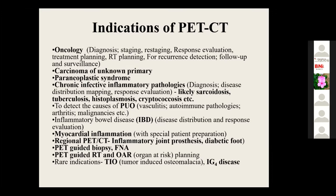We have two half-lives for each radiopharmaceutical: physical half-life and biological half-life. The physical half-life of F18-FDG is 110 minutes, approximately 2 hours. The biological half-life is 30 to 50 minutes depending on body metabolism. The effective half-life is always closer to the shorter half-life, so it is near 30 to 50 minutes. After five half-lives, the remaining radioactivity inside the body is considered negligible.